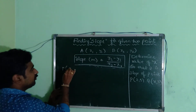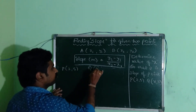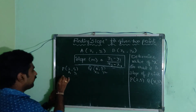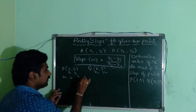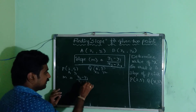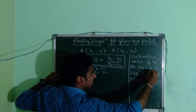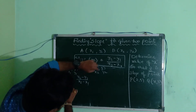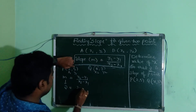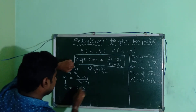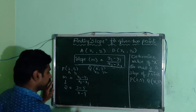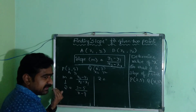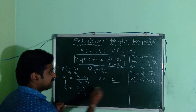Point P has coordinates 2, 5, so x1 is 2 and y1 is 5. Point Q has coordinates x, 3, so x2 is x and y2 is 3. The slope formula is m equals y2 minus y1 by x2 minus x1. Substituting, m equals 2, y2 is 3, y1 is 5, x2 is x, x1 is 2. So 2 equals 3 minus 5 by x minus 2, giving 2 equals minus 2 by x minus 2.